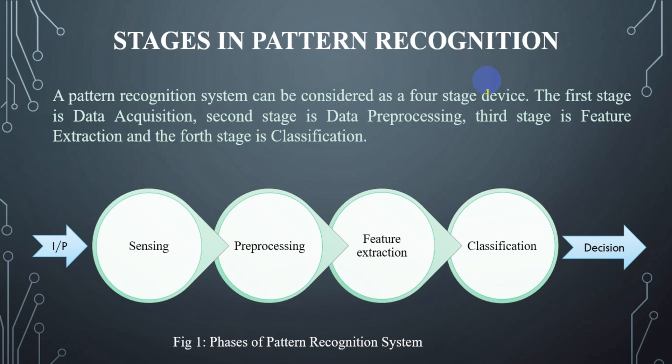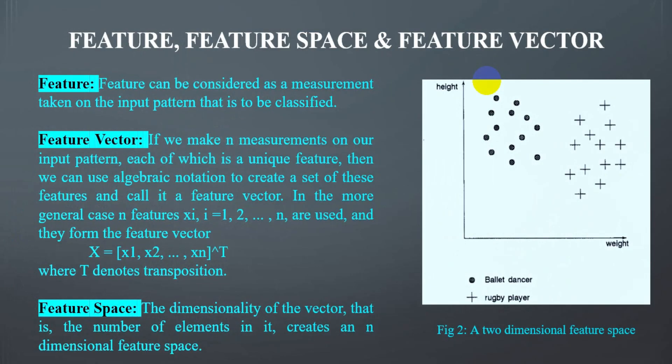Whatever process is required before processing the data is included in the pre-processing stage. After that comes feature extraction — we are going to learn what features are and what we mean by feature extraction in the later slides. The last phase is classification: using features and learned models to assign a pattern to a category. We are going to understand all of this in later slides.